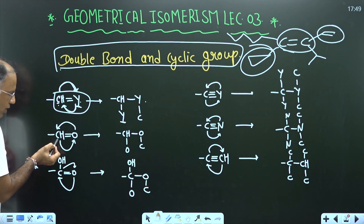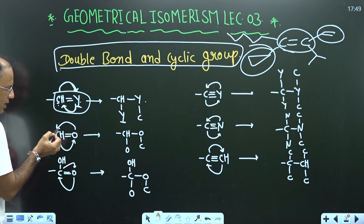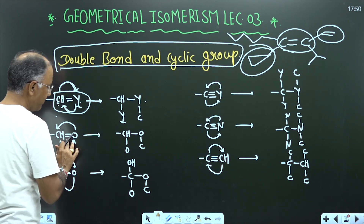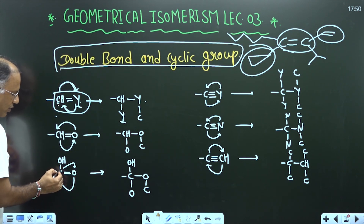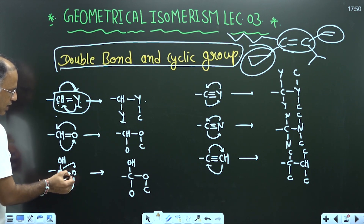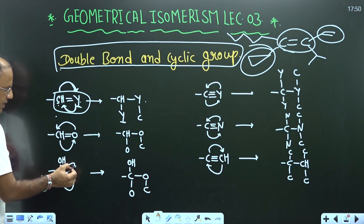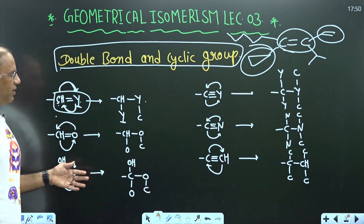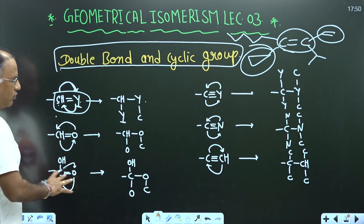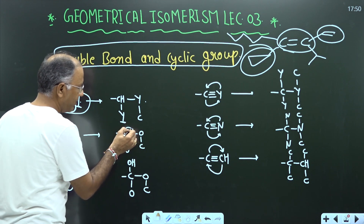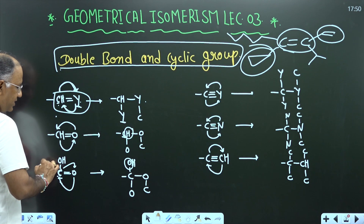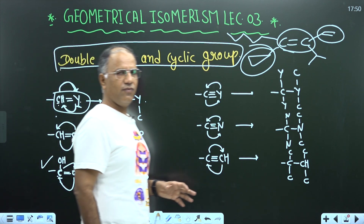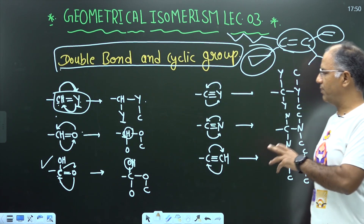Let us take one more example. Whenever there is a pi bond, you write this atom here and this atom here. If I shift this atom here, then one of the carbon valencies will be carbon-oxygen. In this way an aldehyde will be represented. If there is an acid, you write this atom below oxygen and oxygen below this atom. Now we compare aldehyde and acid: after the common carbon, there is a hydrogen and there is an oxygen. Acid is given priority over aldehyde because oxygen has a higher atomic number than hydrogen.